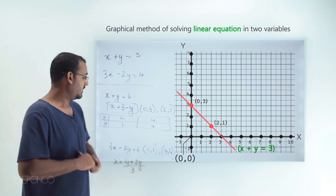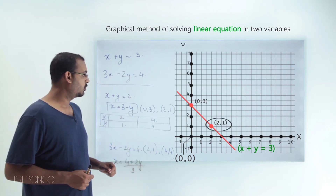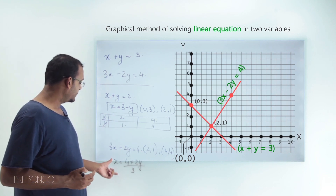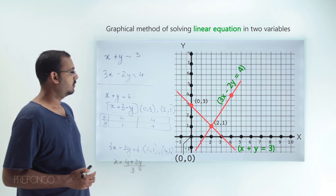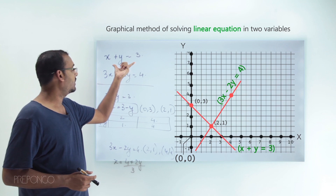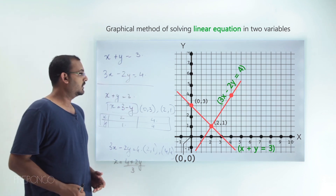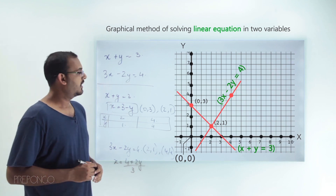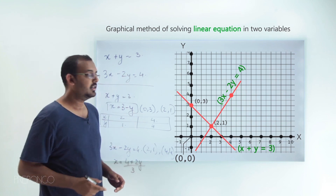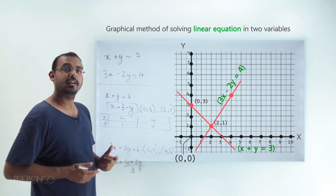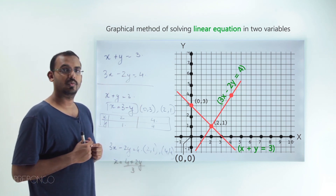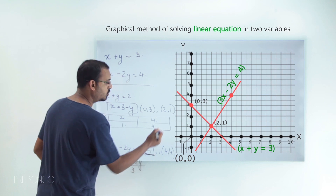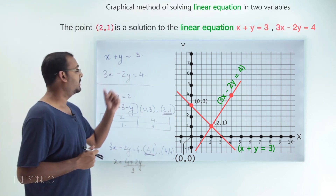Let's plot the points (2, 1) and (4, 4) and draw a line through them. This line represents the equation 3x − 2y = 4. Now we have plotted both lines on the graph. Looking at the graph, we can clearly see that the point (2, 1) lies on both lines, and there is no other point which lies on both. So there is only one solution — a unique solution — to this pair of linear equations, and that solution is the point (2, 1).